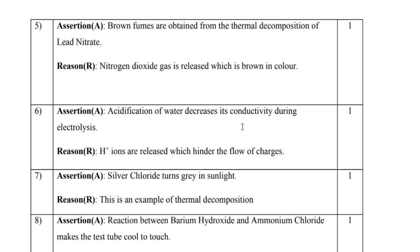Question 6: The assertion is that acidification of water decreases its conductivity during electrolysis. The reason given is that H⁺ ions are released which hinder the flow of charges. The assertion itself is wrong — acidification increases conductivity — so D is the correct option.